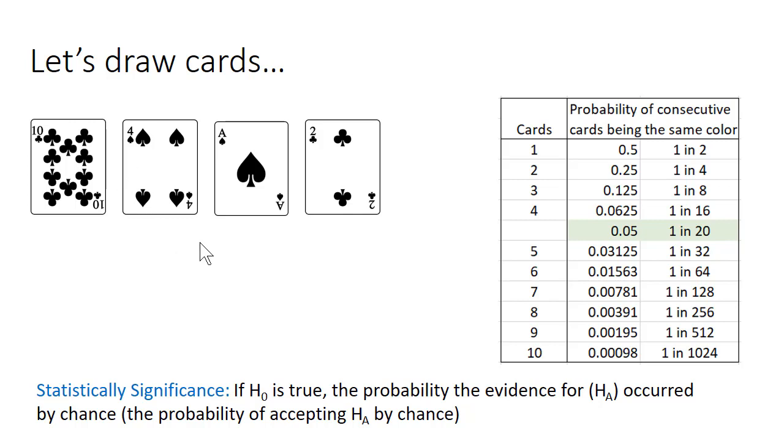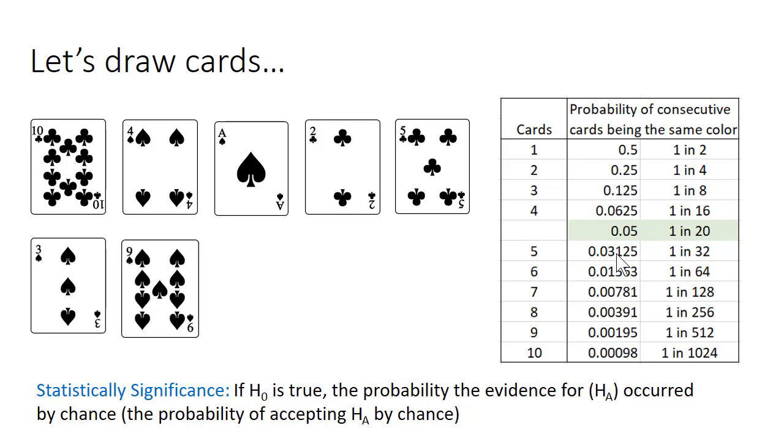Now if we draw a fifth card, now the probability that we drew five cards of the same color is 0.03. Now the evidence starts to, for most people, starts to be pretty strong that we have a non-randomly shuffled deck. And if we continue doing this, each card that we draw that is continually of the same suit, the probabilities get smaller and smaller.